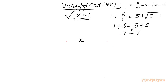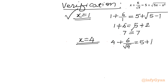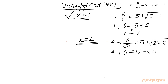Now let us consider the second solution, x = 4. LHS = (4 + 6)/√4 = 10/2 = 7. RHS = 5 + √(5·4 − 4²) = 5 + √(20 − 16) = 5 + √4 = 5 + 2 = 7. So 7 = 7. Verified.